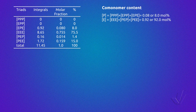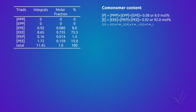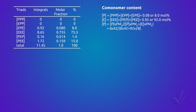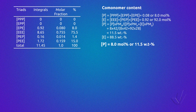NMR gives the molar fraction or molar percentage, but if we want to know the mass fraction or mass percentage, we have to multiply the molar amount of each monomer by its molar mass. In this case, we multiply 8 by the molar mass of propylene (42 g/mol) and 92 by the molar mass of ethylene (28 g/mol). So this particular copolymer has 11.5 weight percent propylene and 88.5 weight percent ethylene.